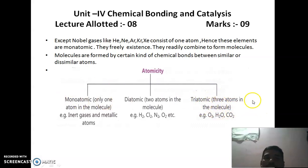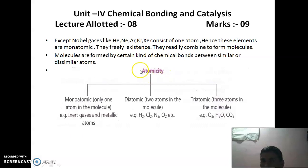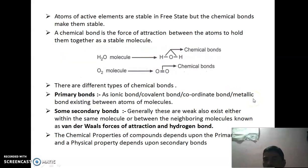That is the concept of atomicity. Atomicity is defined as the number of atoms present in the molecules of an element. Atomicity types are monoatomic, diatomic, and triatomic.